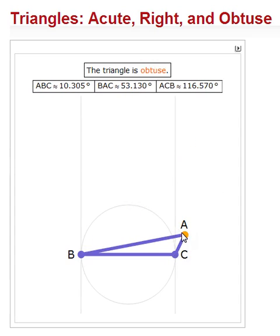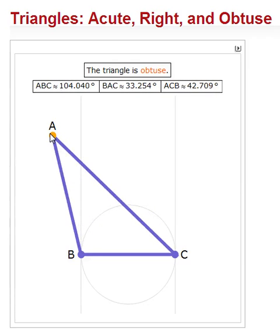Once again, obtuse, because if we were to—A and C, sorry—are the diameter of this imaginary circle. We draw the circle and B is inside the circle. Here's the center point, and so it is obtuse.